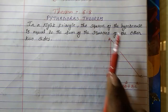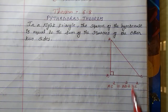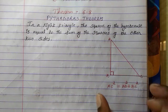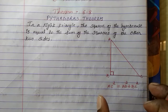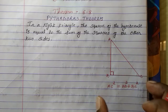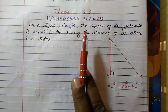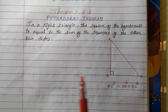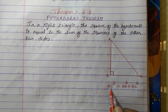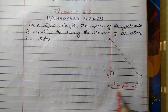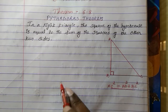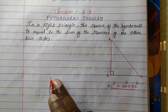In a right triangle, this is what we have to prove. It was basically invented by Pythagoras, and therefore the name Pythagoras Theorem is given. So this is what we have to prove in this theorem.